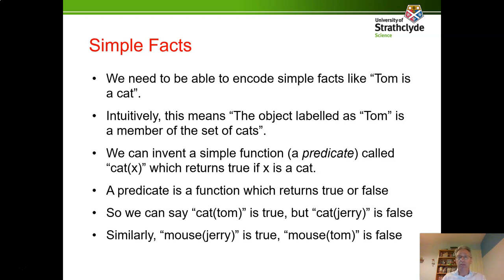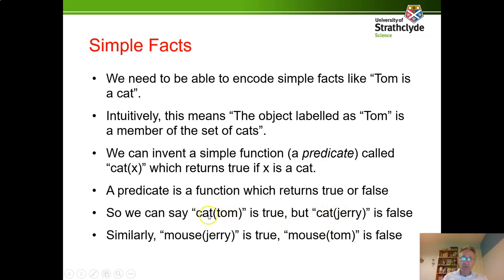We need to encode simple facts like 'Tom is a cat' into a form we can manipulate. We invent a simple function called a predicate. This function takes in an object X and returns true if X is a cat, false if it isn't. So cat(Tom) is true, but cat(Jerry) is false. The word 'cat' here — think of it as the set of all cats. That's what this is trying to capture.